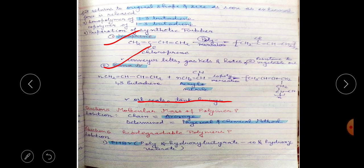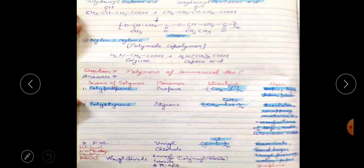The molecular mass of a polymer can be determined by taking the chain average using physical and chemical methods. For biodegradable polymers, remember PHBV — poly(β-hydroxybutyrate-co-β-hydroxyvalerate) — taken directly from NCRT.